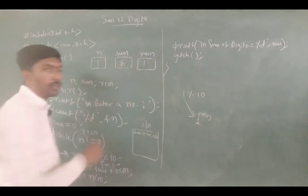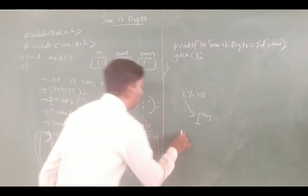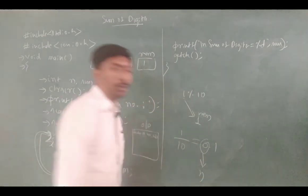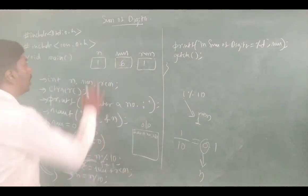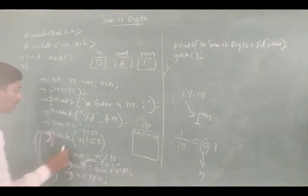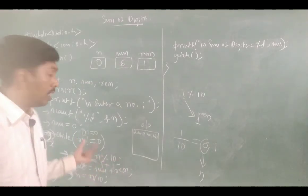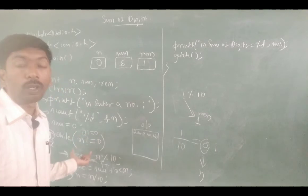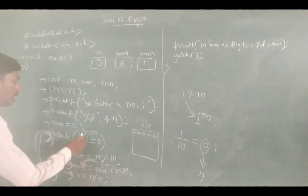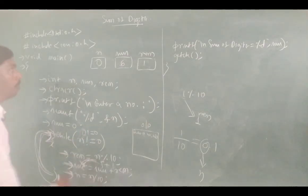Sum is now 6. Next, n is equal to n divided by 10: 1 divided by 10 is 0.1, so n becomes 0. Now n is not equal to 0 — condition is false, 0 is not equal to 0 is false — so we exit the while loop.